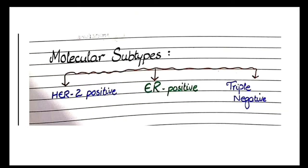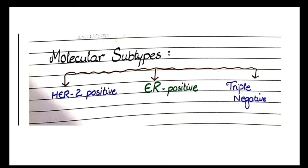What are the molecular subtypes? They are divided into three categories: ER positive, which is the most common one, HER2 positive, and triple negative.